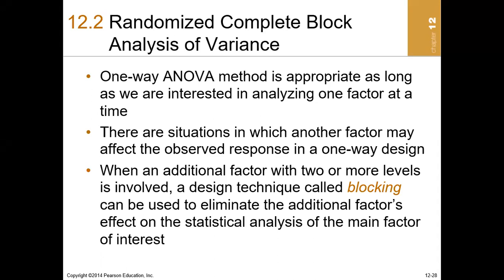In this particular video, which is part of the series on ANOVA, I'm going to teach randomized complete block analysis of variance. The one-way ANOVA we've done so far is appropriate so long as we're interested in analyzing one factor at a time. However, there are situations where extraneous factors we may not be aware of can influence the results, so we need to block those additional factors to focus on the main factor. That procedure is called blocking.